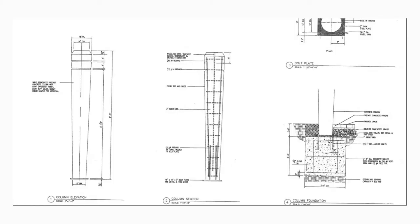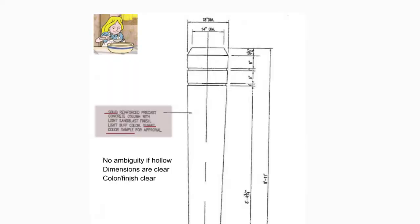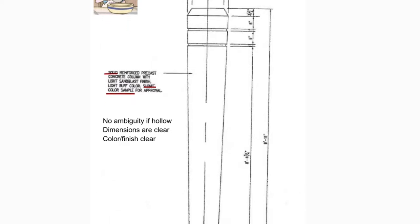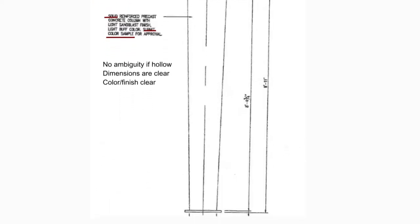This is a big tall column — maybe 14, 16, or 18 of them making a colonnade with a trellis up top. They tell me it's solid, which eliminates ambiguity, since sometimes we do columns as column covers with steel inside or make them partly hollow. They also specify a light sandblast, light buff color, and say submit a color sample for approval. No ambiguity — clear dimensions, color, and finish. I'm good to go.